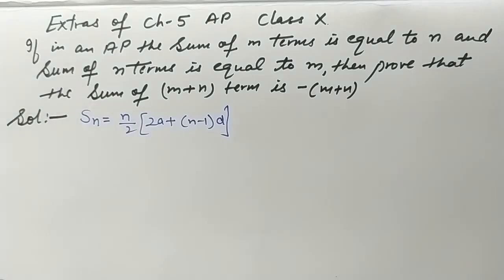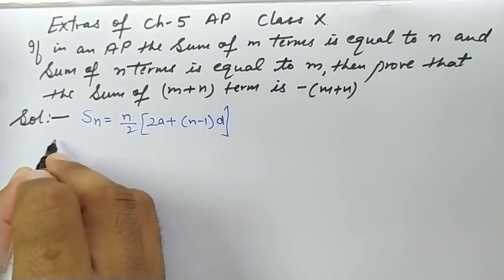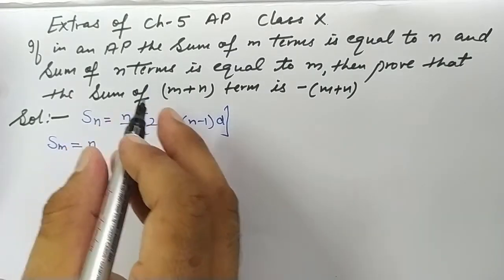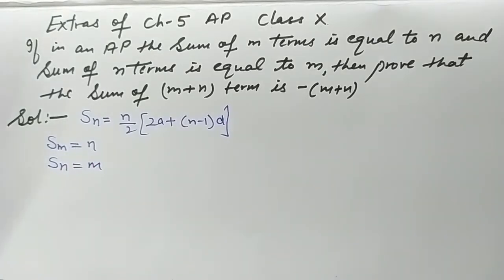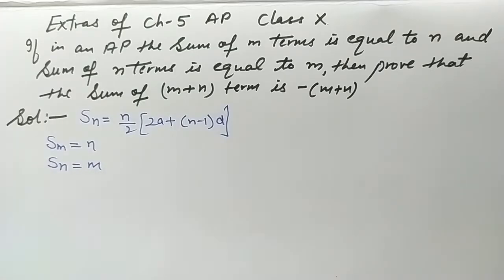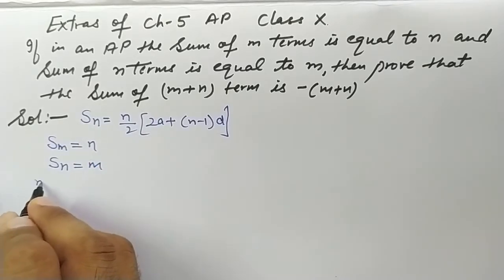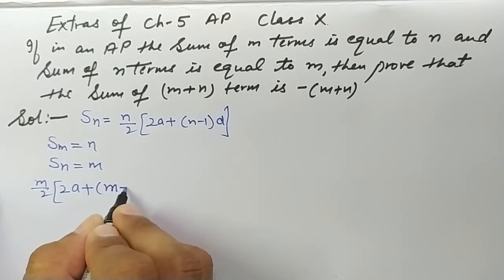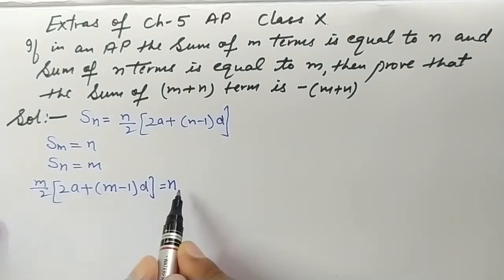Let's start the question. What is given: the sum of m terms is equal to n, so S_m = n. And the sum of n terms is equal to m, so S_n = m. We need to find S_(m+n), which should come out to minus (m+n). So fill in the formula: S_m = m/2 into (2a + (m−1)d) = n.